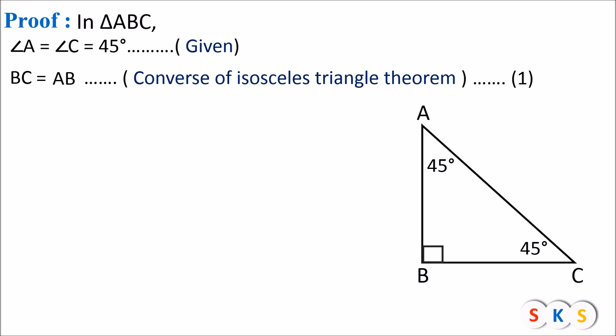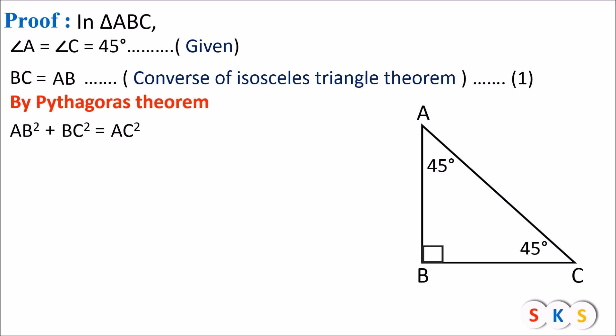Now we will apply the Pythagorean theorem. The theorem states that the square of one side plus the square of the second side equals the square of the hypotenuse, so AB squared plus BC squared equals AC squared. We can replace BC with AB since AB and BC are equal by equation 1, giving AB squared plus AB squared equals AC squared.